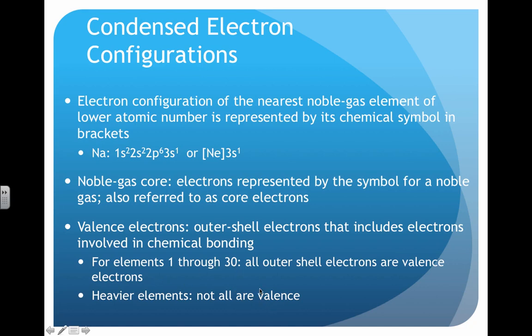For elements one through 30, all outer shell electrons are valence electrons, but for heavier ones, this isn't true. If you think about the overlapping from earlier, that will make more sense. We'll illustrate this more in class.